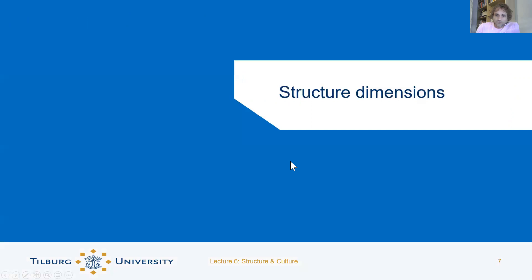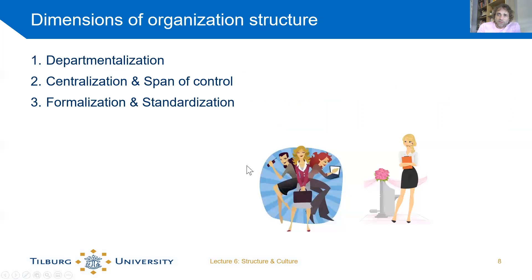Moving on to the structural dimensions of organizations. There are basically three main dimensions you can use to classify the structure of an organization: departmentalization, centralization and span of control, and formalization and standardization. Let's discuss all three.